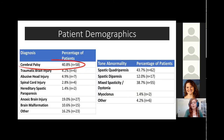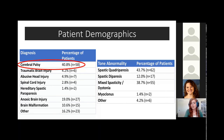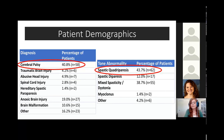Overall, cerebral palsy was the most common diagnosis in our patient population, and this is a very common muscle spasticity-associated condition. The most frequent tone abnormality that we observed was spastic quadriparesis, meaning the patient had muscle spasticity in all four limbs.